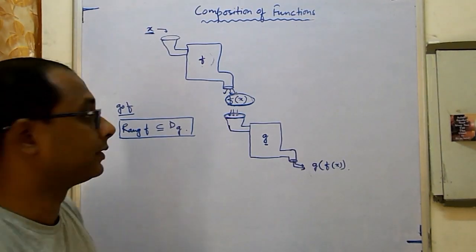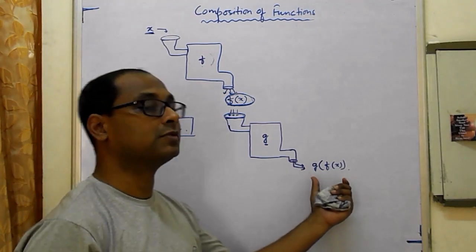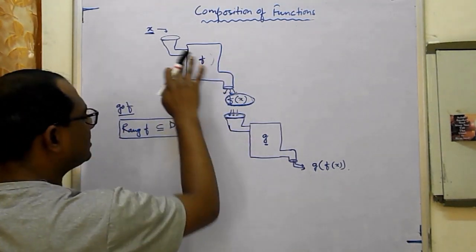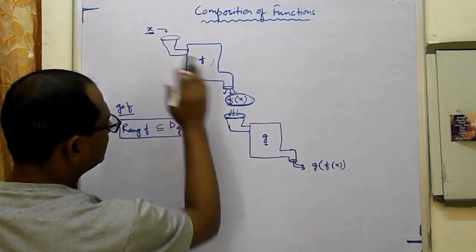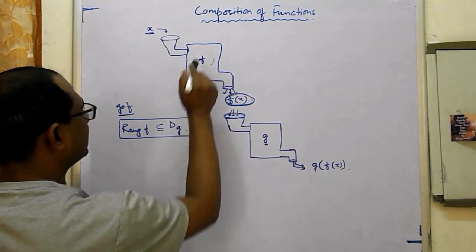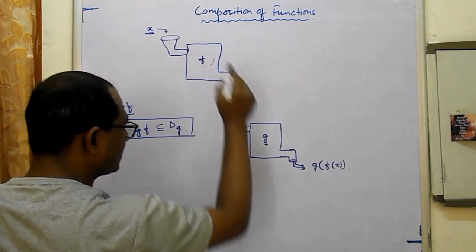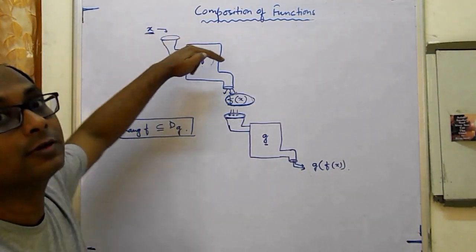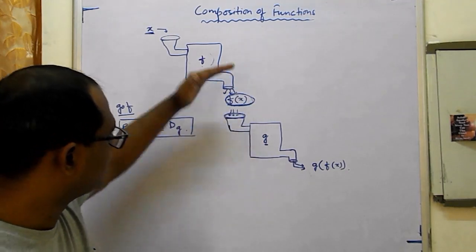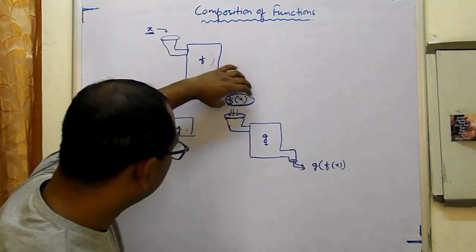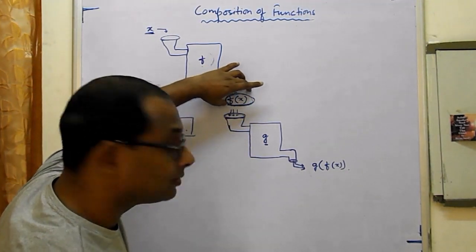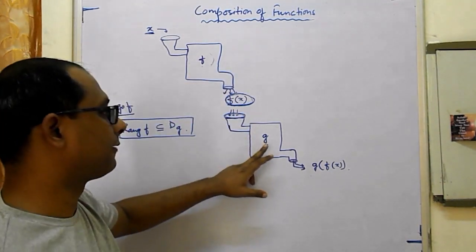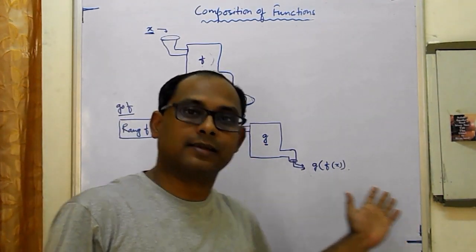Similarly for f of g, we just interchange the functions. G becomes the first function and f becomes the second. So x undergoes g giving g(x), and all the images of g must undergo f in order to get f of g(x). That is the basic concept of composition of functions.